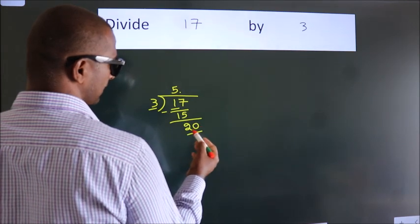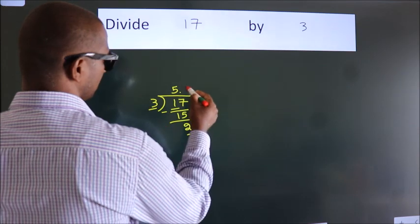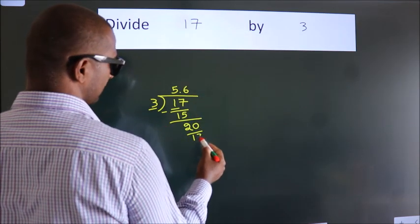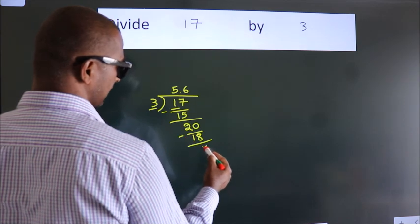So, 20. A number close to 20 in the 3 table is 3 times 6, which is 18. Now we subtract. We get 2.